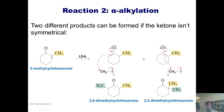If the LDA stole a proton off of the right side of this cyclohexanone, I would get the enolate shown to the right. If the LDA stole the alpha proton off of the left side of this cyclohexanone, I would get the enolate to the left. Alkylating these two enolates would give potentially two different products.